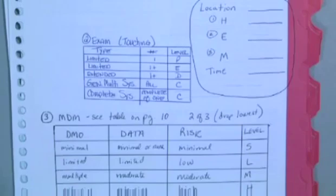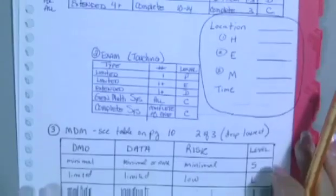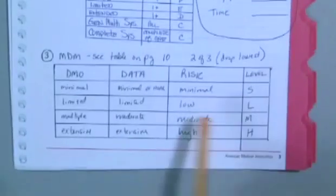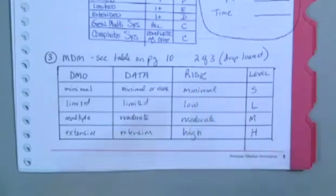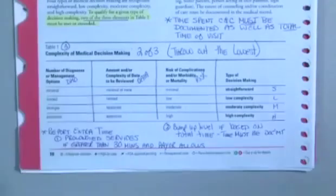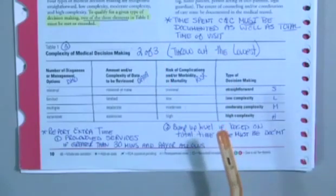What is the level of history? What is the level of exam? What is the level of medical decision making? This questioner is asking specifically about the MDM. So on page 3, what I've done is written in some tables that I do encourage you to write. The medical decision making table is actually a copy of what's already in your manual on page 10. Here it is printed in the manual, and I drew some columns so it's real clear that we're dealing with three separate pieces to medical decision making.